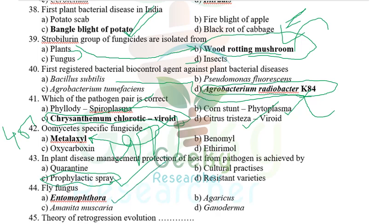Fly fungus — options included Entomophthora and Amanita muscaria (fly agaric). Both can be considered fly fungus, but I selected Entomophthora as it is more related. The theory of retrogression evolution — I don't know the answer for this; I skipped it. If you know the answer, please let me know.